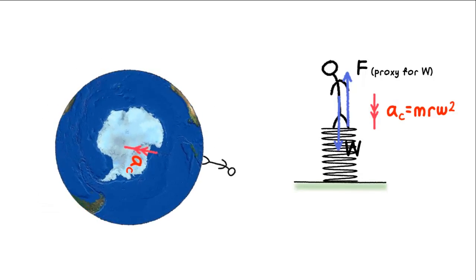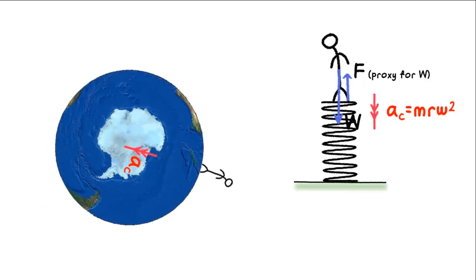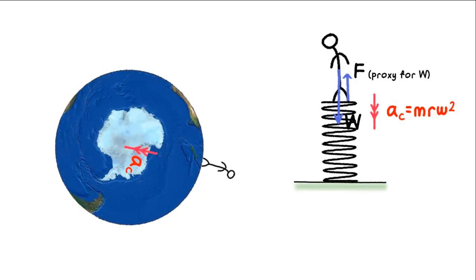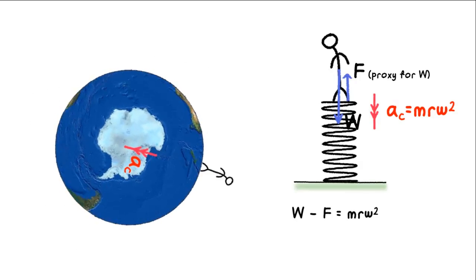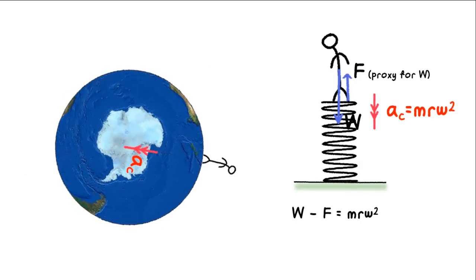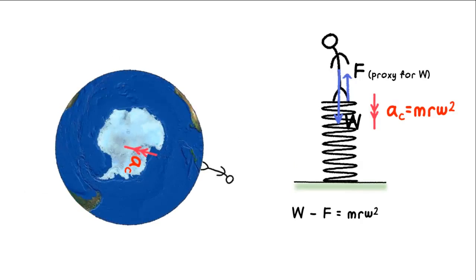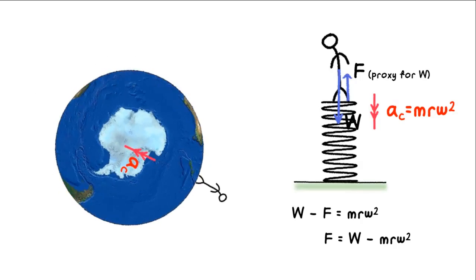This means that the contact force pushing us up must be smaller than the gravitational force pulling us down, and it must be smaller by an amount equal to the centripetal force that's required to keep us in circular motion at this particular radius and speed.